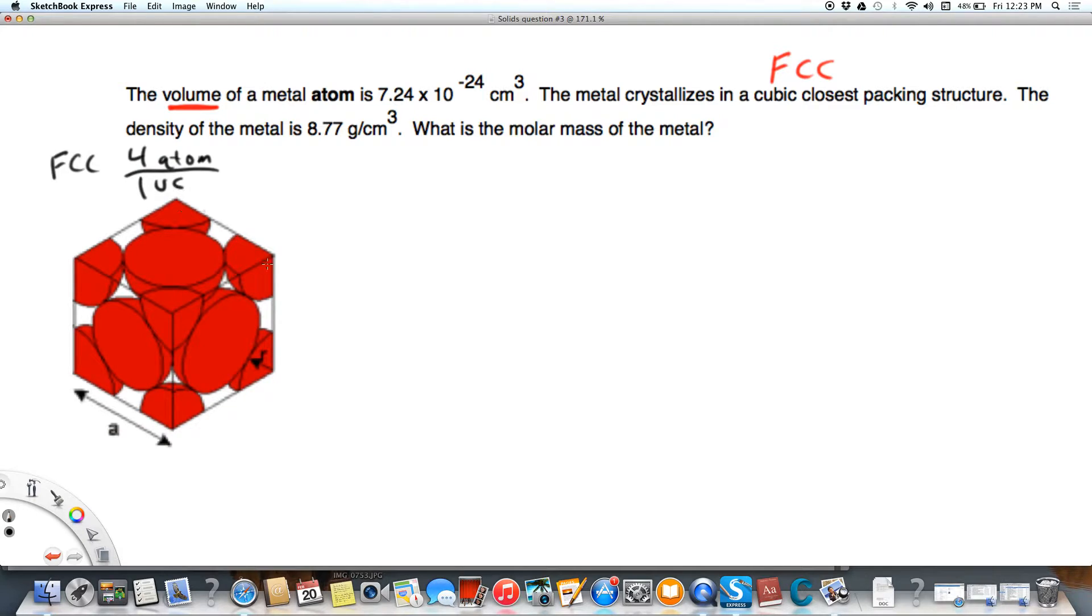We also know that if we need to figure out what the radius is or the edge using Pythagorean Theorem, we know that a, the square root of 2, a being the edge, equals 1, 2, 3, 4 radii. So we're just going to write those things down because we know them right off the bat, and so we need to figure out what is the molar mass. That would be grams per mole. So I'm just going to work up to that point.